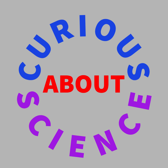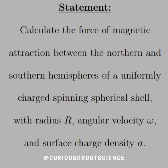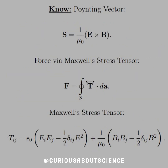Here we go with a difficult but really fun question. We've seen the results of this question before, so it shouldn't look new. The statement reads: calculate the force of the magnetic attraction between the northern and southern hemispheres of a uniformly charged spinning spherical shell with radius R, angular velocity omega, and surface charge density sigma. This should sound familiar from Chapter 5.